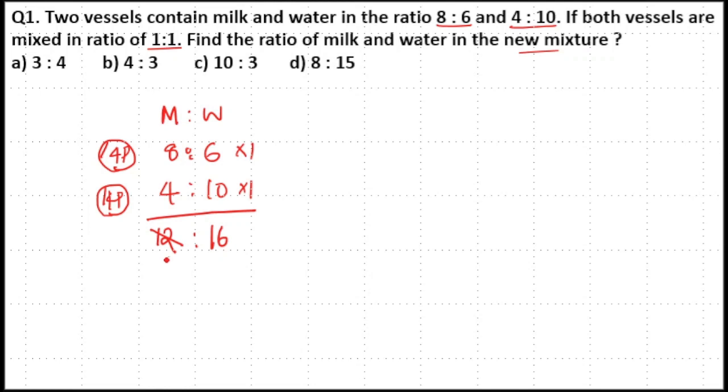If you cancel it with 4, 4 times 3 is 12, 4 times 4 is 16. So 3:4 is the new ratio in the third vessel.